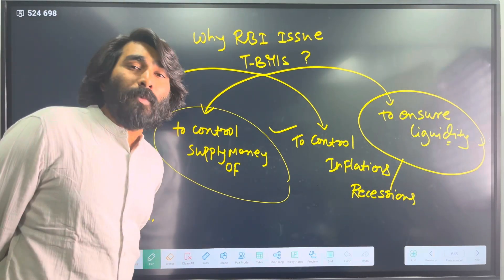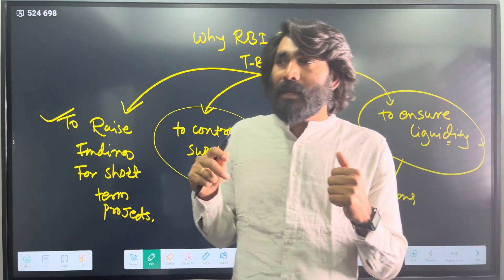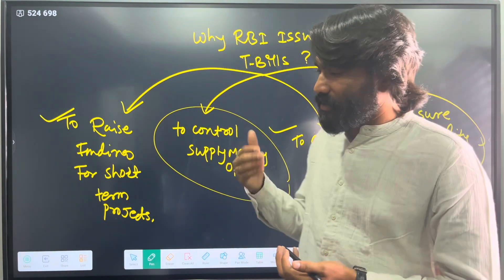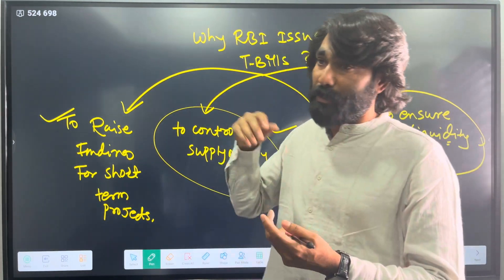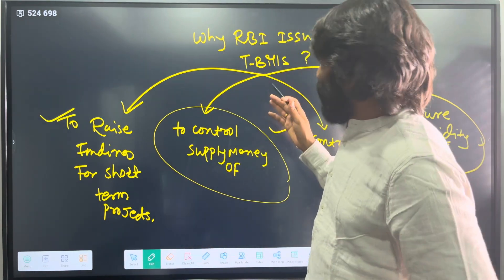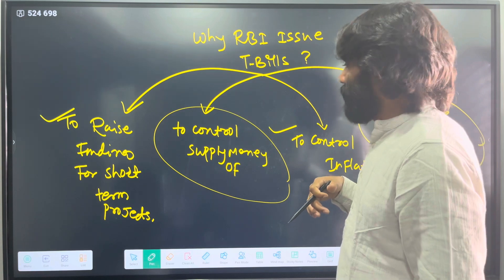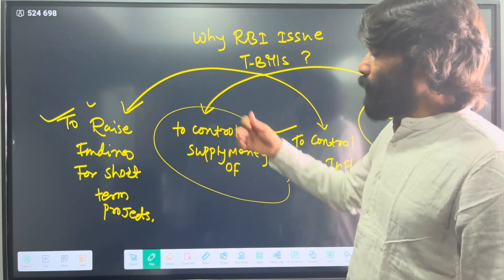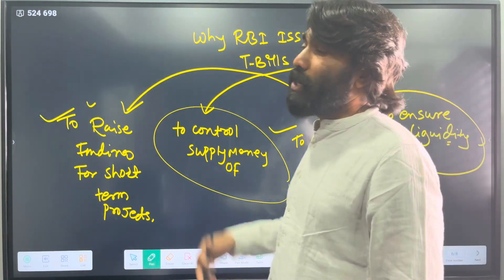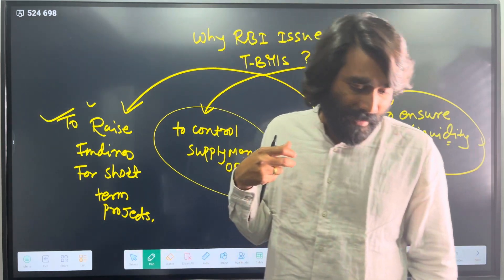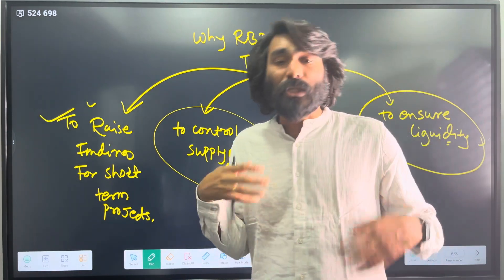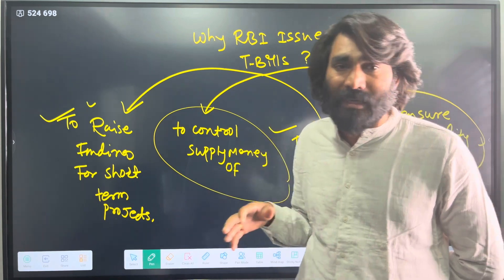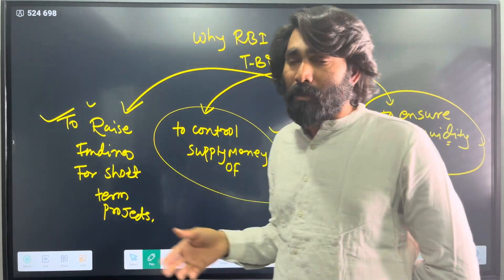Now let's discuss why RBI issues T-bills. First, RBI works as the government's bank, issuing bills in the market to help the government raise funding — short-term or long-term. The first reason is to raise funding for short-term projects. If the government has any short-term plans — scheme announcements, project announcements, departmental salaries, promotions, or marketing — the government issues T-bills to raise that funding.